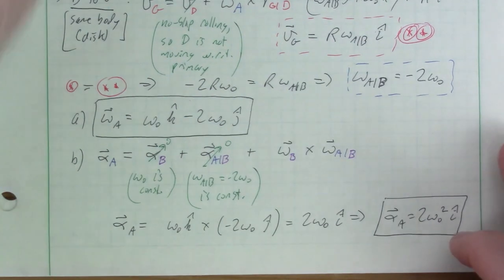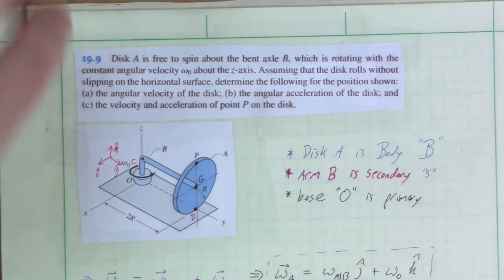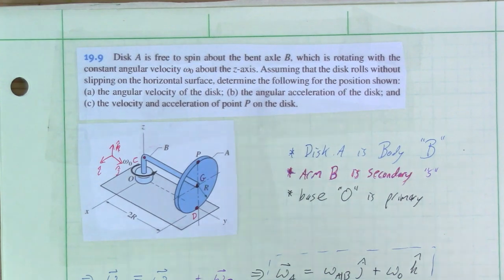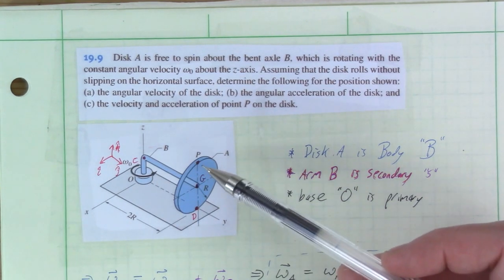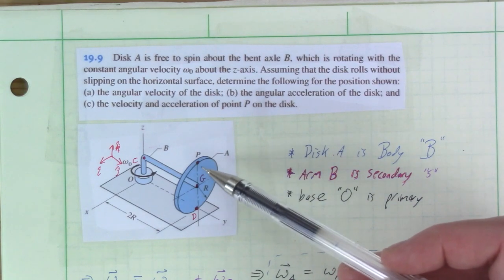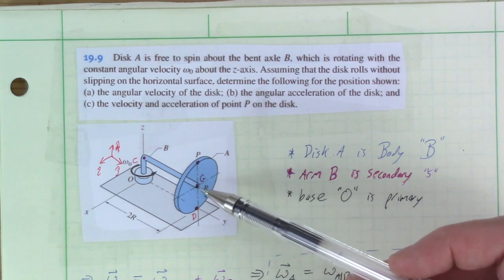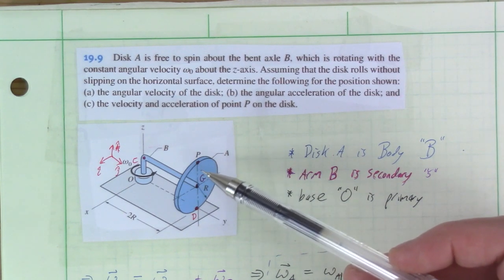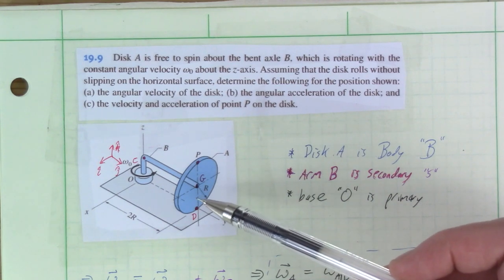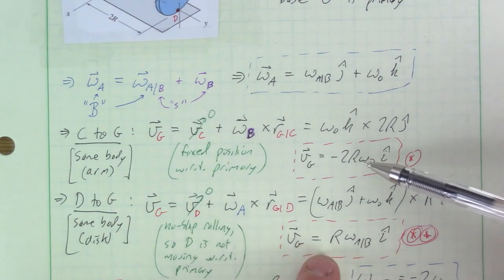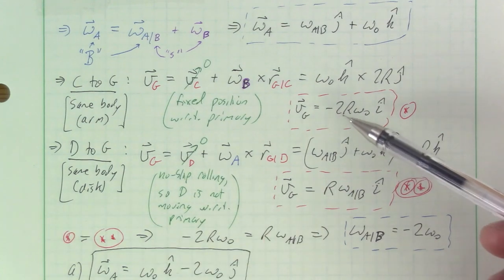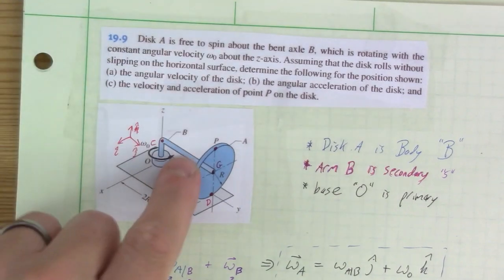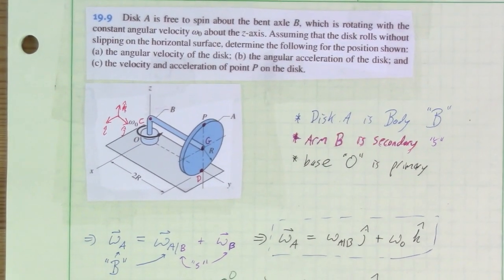For part c, we need the velocity and acceleration of point P at the top of the disk. Since we already found v_G, we propagate from G to P — both are on the same rigid body (disk A). This approach uses our existing work efficiently.